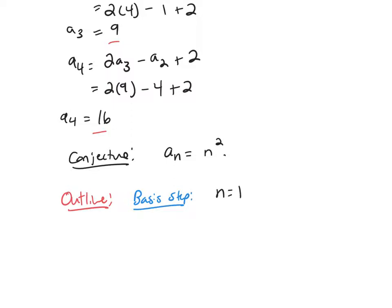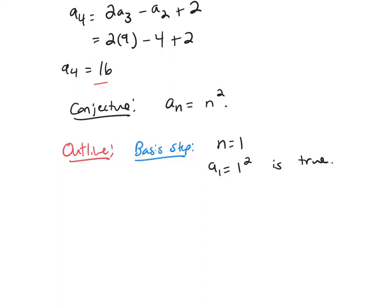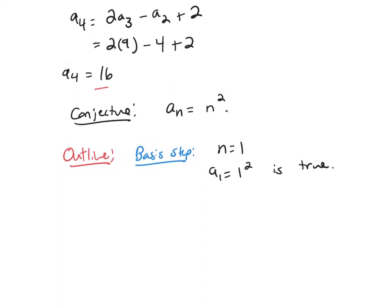So n = 1, a₁ = 1² is true because a₁ was 1. We've actually verified more than just this basis step. We've verified up through a₄ already.